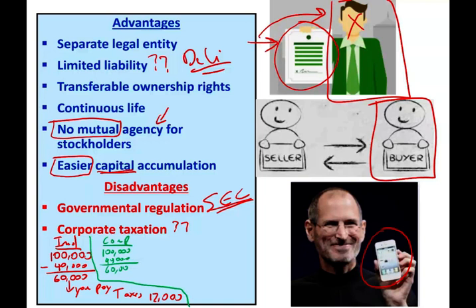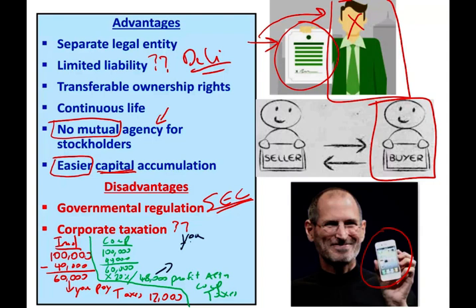Here's what happens first: before you get the money, the corporation has to pay taxes — let's assume 20% as well. So 20% of $60,000 is $12,000. Therefore, $60,000 minus $12,000 leaves $48,000 in profit after corporate taxes. Then this $48,000 goes to you, and then you have to pay taxes again — let's assume 15%. So 15% of $48,000 means you pay $7,200 in additional taxes. So the profit of $60,000 was taxed once and then taxed again — it's taxed two times. It's called double taxation.